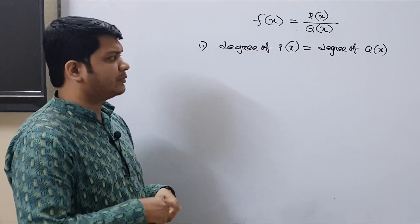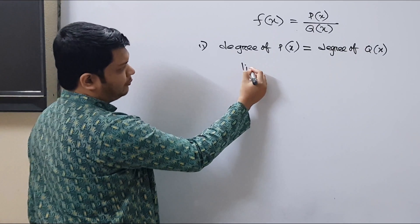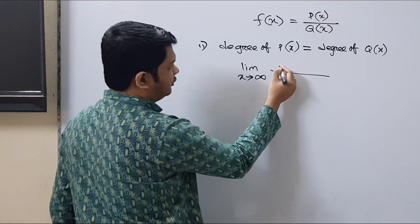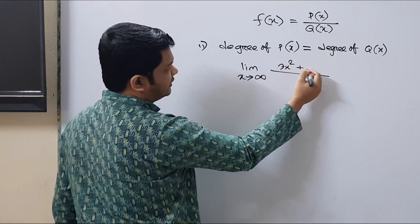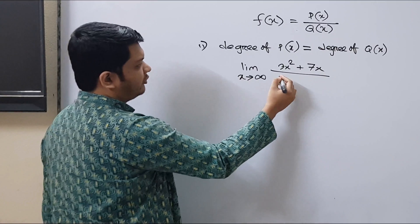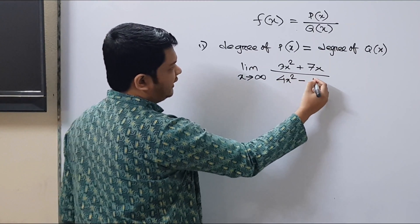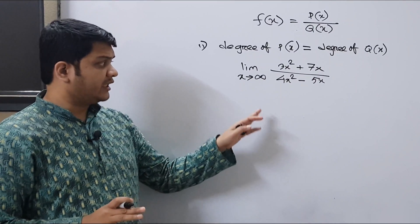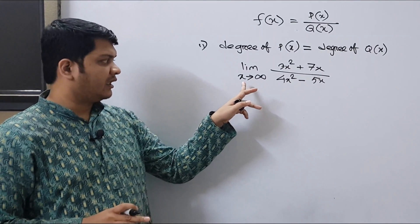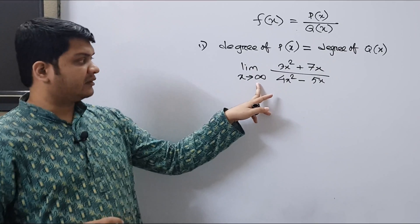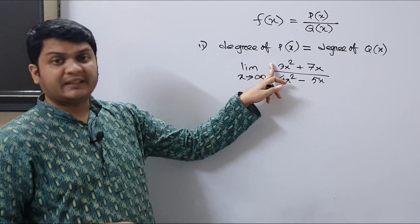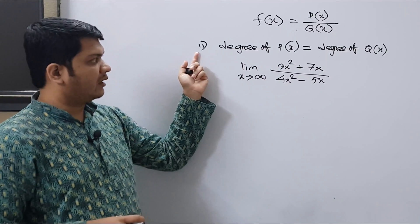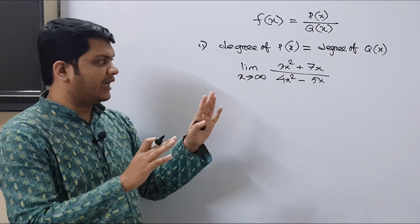So let's see some examples. Suppose we have the problem: limit as X tends to infinity of (3x² + 7x) divided by (4x² - 5x). As you can see, this is an infinite limit where X tends to positive infinity, and the degree in the numerator is 2 and the degree in the denominator is also 2. So we are in Case 2, where the degrees are equal.